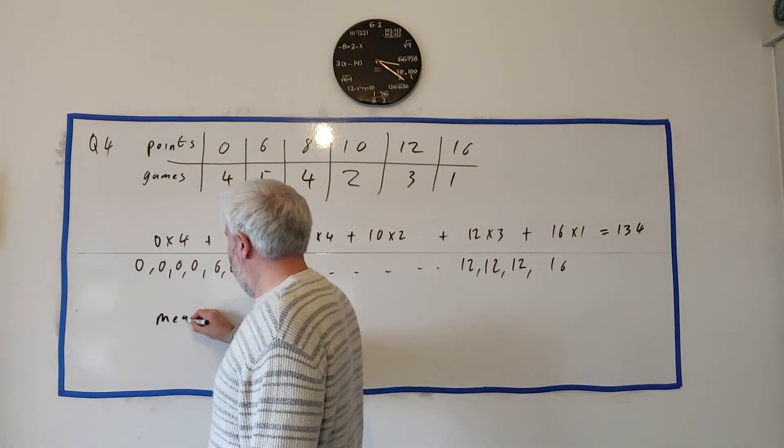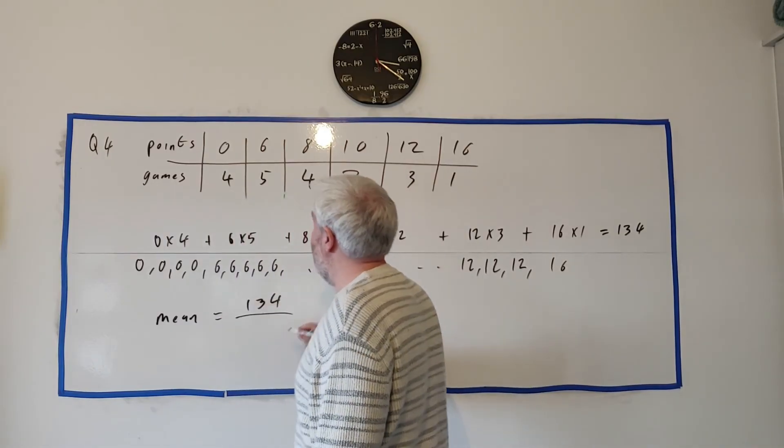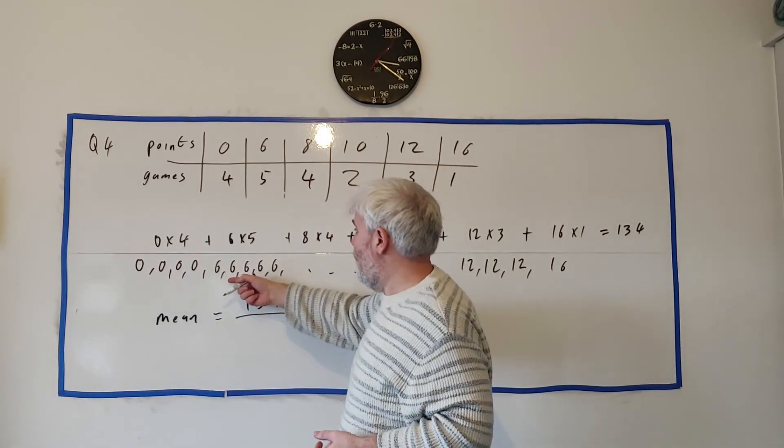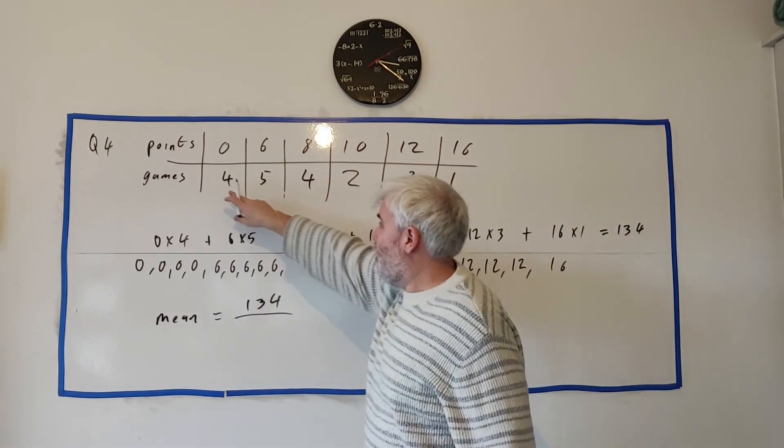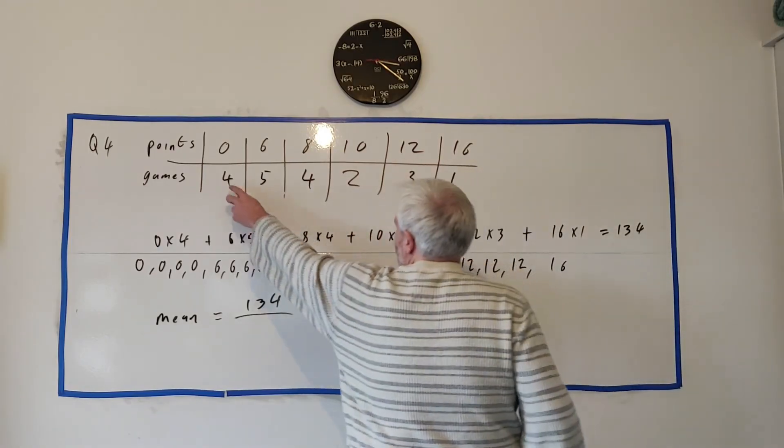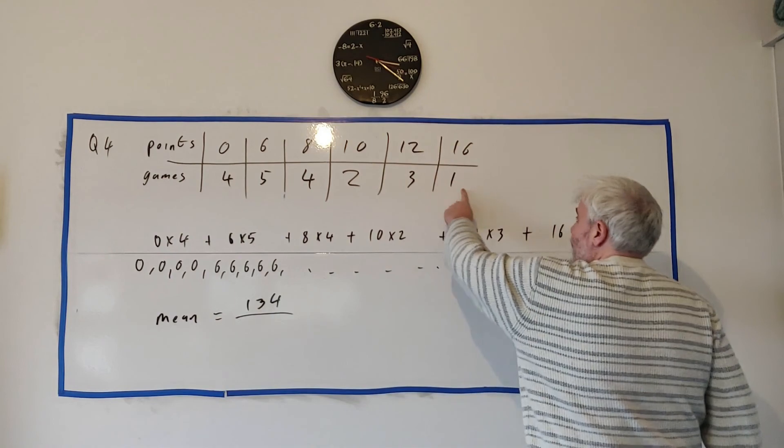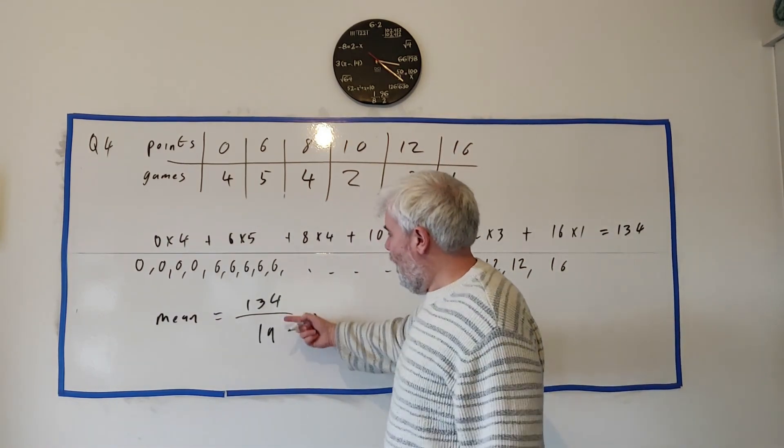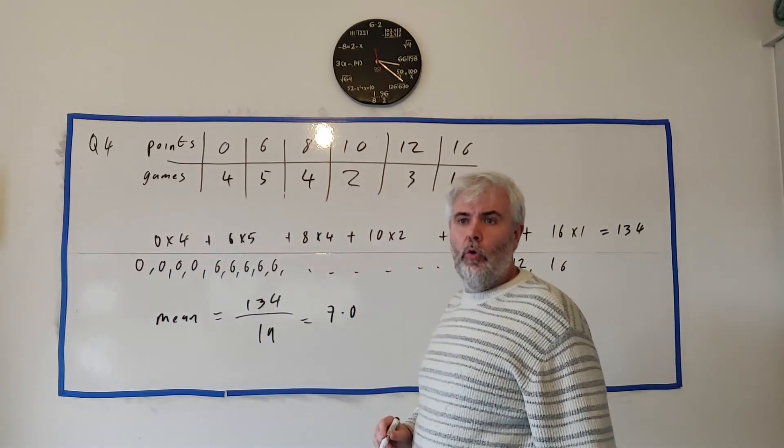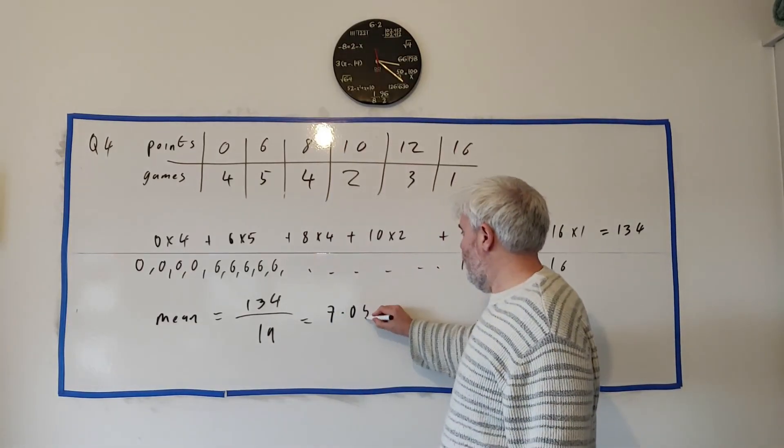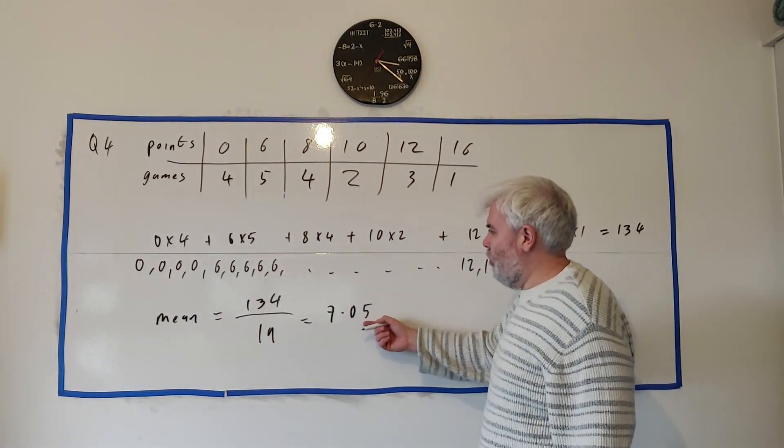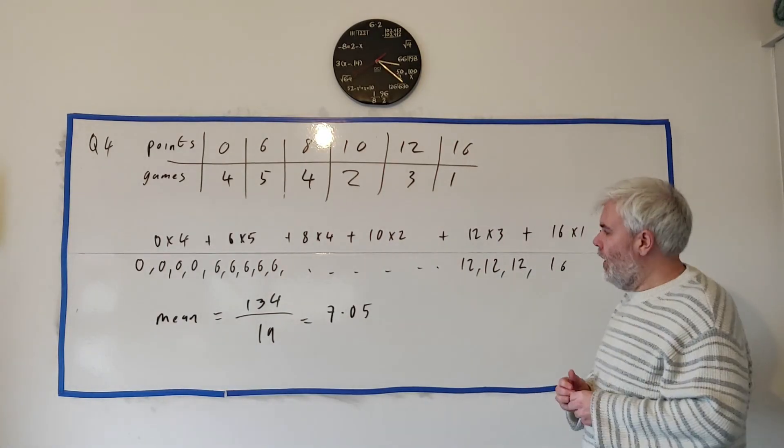So the mean would equal 134 divided by all of these numbers. How do we add up all of these numbers? Well, there's four zeros. There's five sixes. That's where I'm getting these. So we just add up this bottom row. 4 plus 5 plus 4 and so on. We get 9, 15, 18, 19. Again, double check that on the calculator. And we divide these. On a calculator, we get 7.05. But if we round it off to two decimal places, that's what we get there.